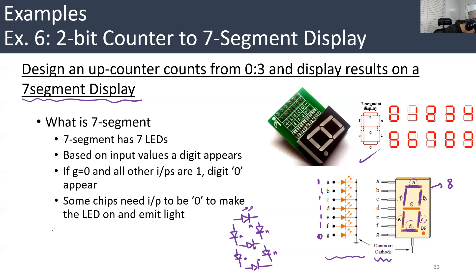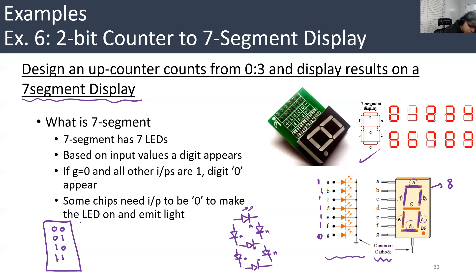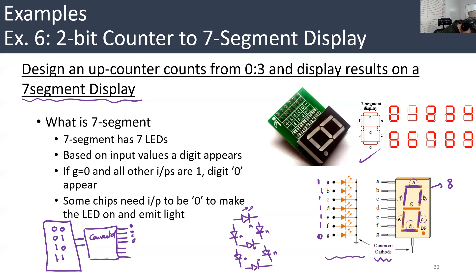So the counts are 00, 01, 10, 11. But these counts will appear on a seven segment display. If this is the counter, the original counter has just two outputs. These two outputs should be converted to seven segments — seven outputs: A, B, C, D, E, F, G.